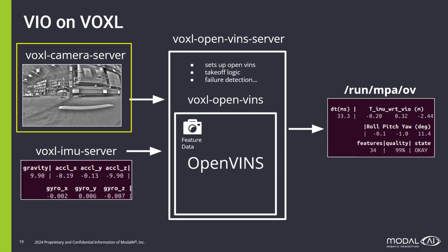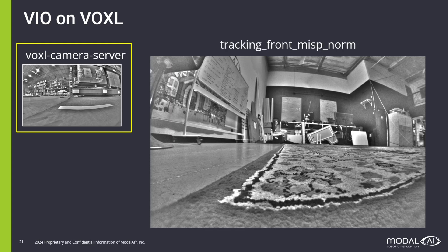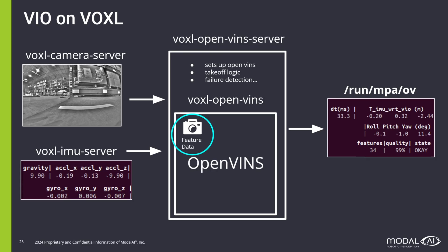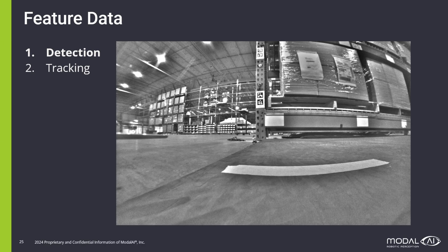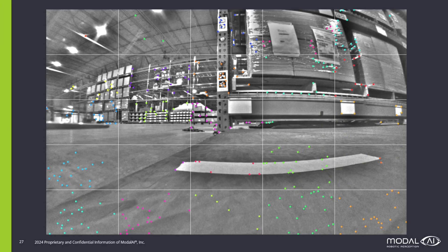One thing to note about the input tracking images is that the default camera images look like this, but we apply a normalization when they are used for detection and tracking, because this brightens the corners of the image and generally helps the algorithms perform. The two main steps of working with feature data are detection and tracking. Detection starts with an input image, and we run a detection algorithm that identifies features. In this example, we use FAST9 across a 5x5 grid, and different grids have different colors.